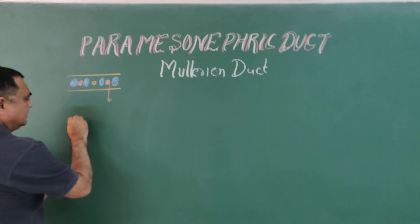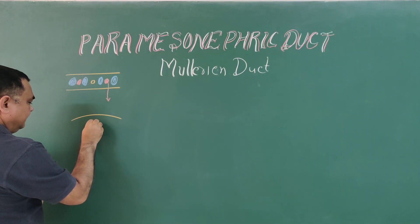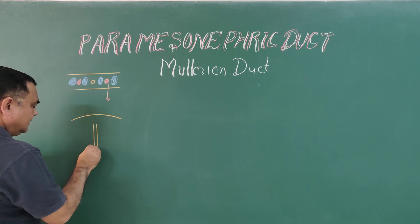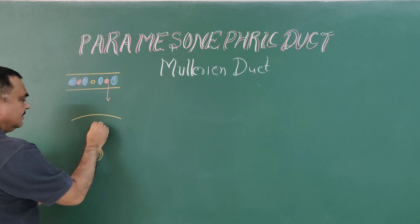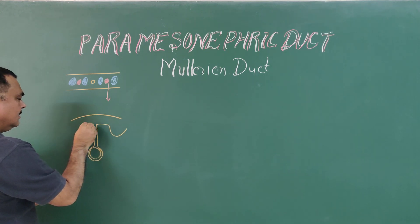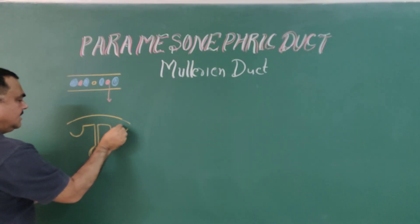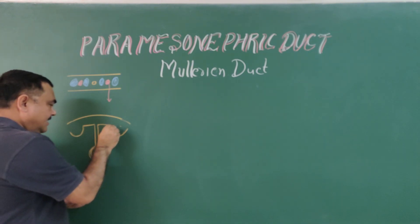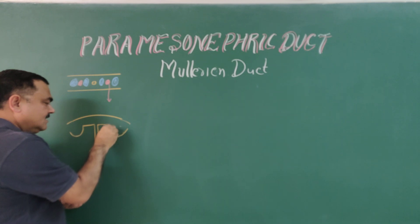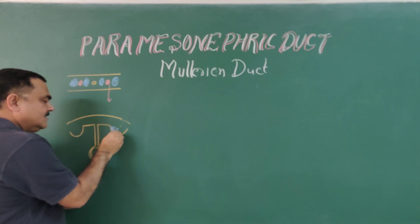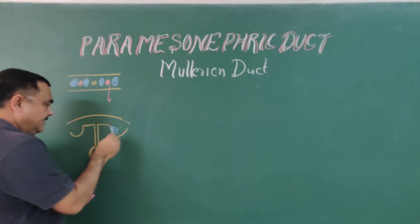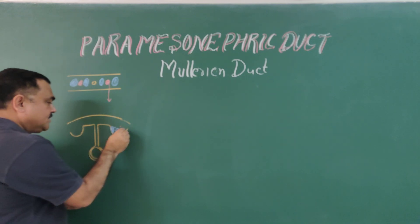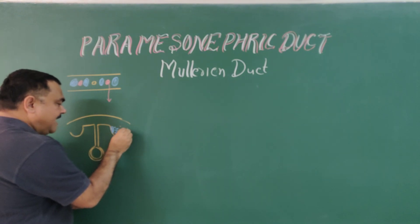Here you can see the developing gut, this is the mesentery, and here is the portion of the nephrogenic cord. The medial-most structure is where gonads develop, then tubules develop, then the mesonephric duct develops, and the most lateral structure is the paramesonephric duct.